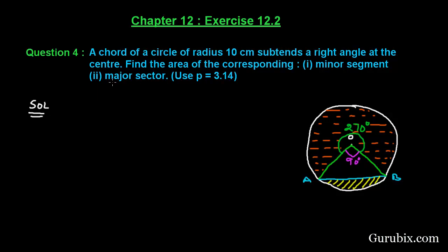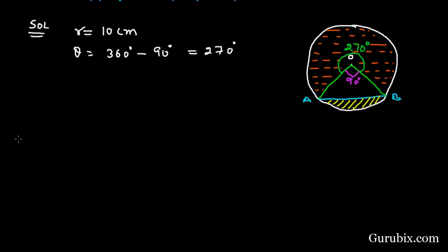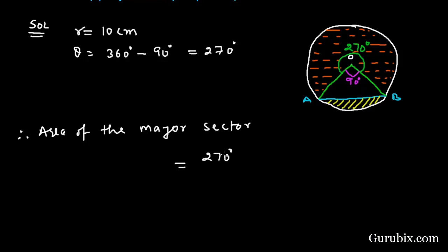Since this angle is 90 degrees, clearly the remaining angle for the major sector is 270 degrees. We shall find the area of the major sector. The radius is 10 centimeters and theta is 360 degrees minus 90 degrees, which equals 270 degrees. Therefore, area of the major sector equals theta over 360 times pi r squared, that is 270 over 360 times 22 over 7 times 10 times 10.